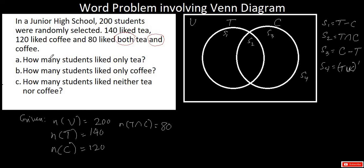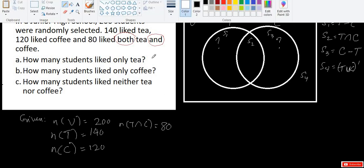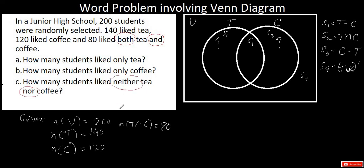Now let's look at what is asked. How many students liked only tea? This is region S1 in the Venn diagram. How many students liked only coffee? This is region S3. How many students liked neither tea nor coffee? The keyword 'neither nor' means 'not,' so these are students who don't like tea or coffee but are part of the 200 surveyed — that is region S4.